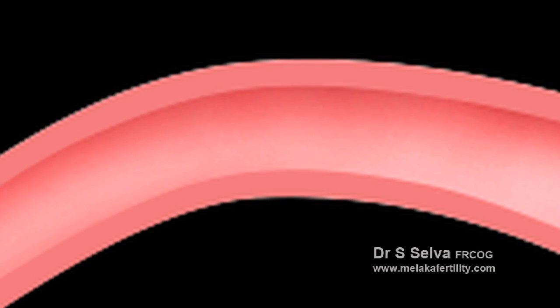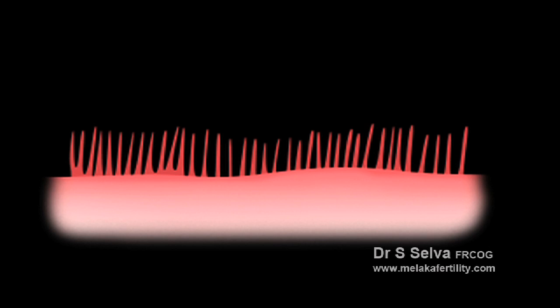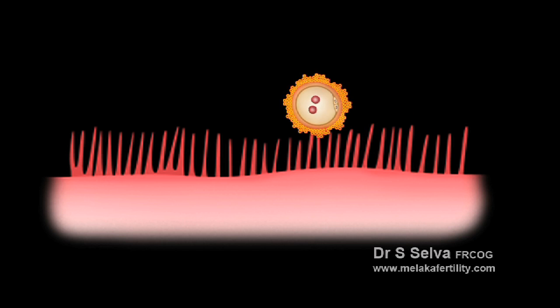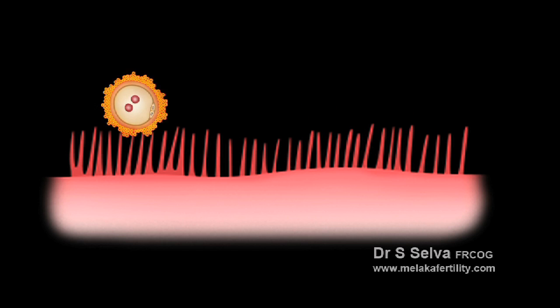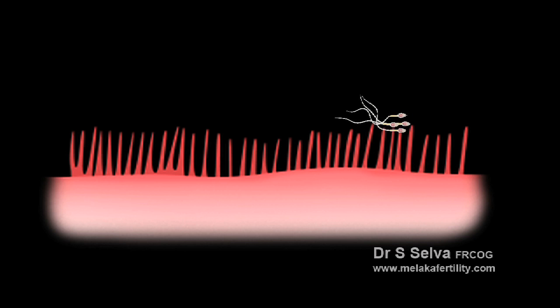The inner lining of the fallopian tube is made up of finger-like projections called cilia. These cilia are important in assisting the movement of eggs towards the uterine cavity and the sperm into the ampulla of the fallopian tube.